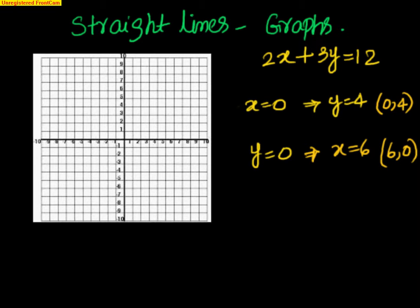Now this is pretty simple. I can go to (6, 0) and also I can mark (0, 4). And if I join them, that's a straight line. That's how you can plot the straight line.